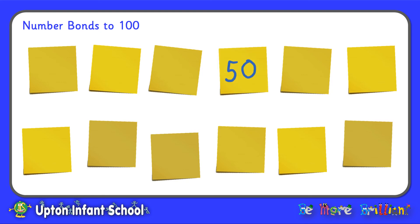50. Let me choose another number. 50 and 10. No, I haven't chosen correctly there. 50 and 10 make 60. So those are not number bonds to 100. I'll turn them back over. So let's go again.